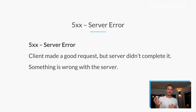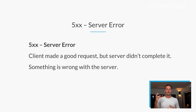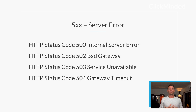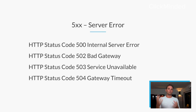The 500 block means the client made a good request, but the server didn't complete it — something is wrong on the server side. For example, I'm in Chrome, I request the website, I did everything right on my end, but something's wrong with the server. Like a 500 — an internal server error. Maybe a 502, bad gateway. 503, service unavailable. 504, gateway timeout. The broad idea here is that 500 errors are server problems, not client problems.